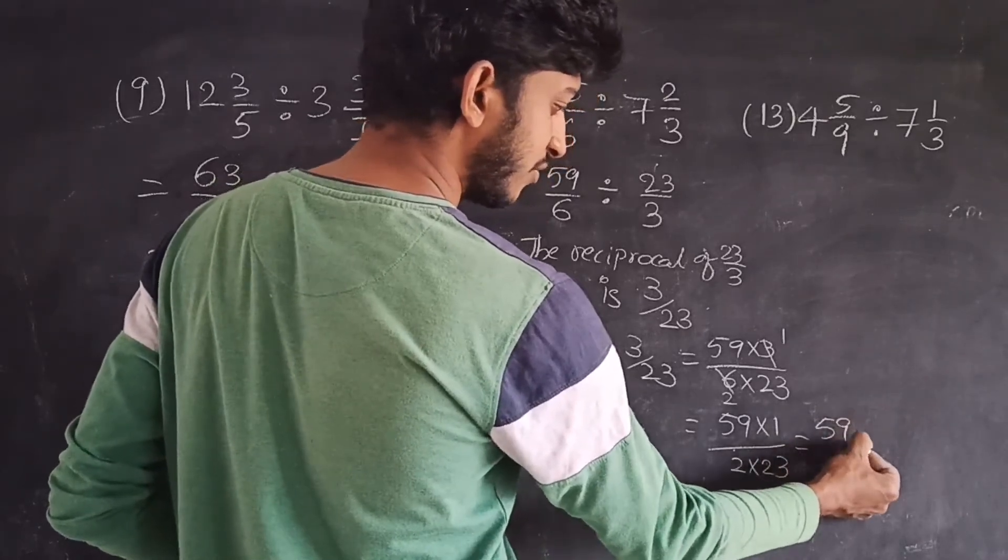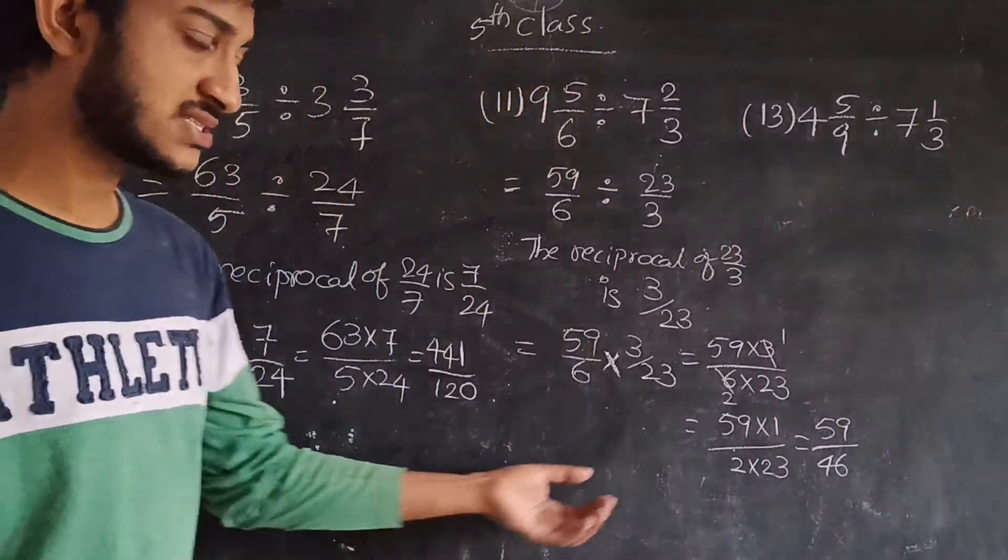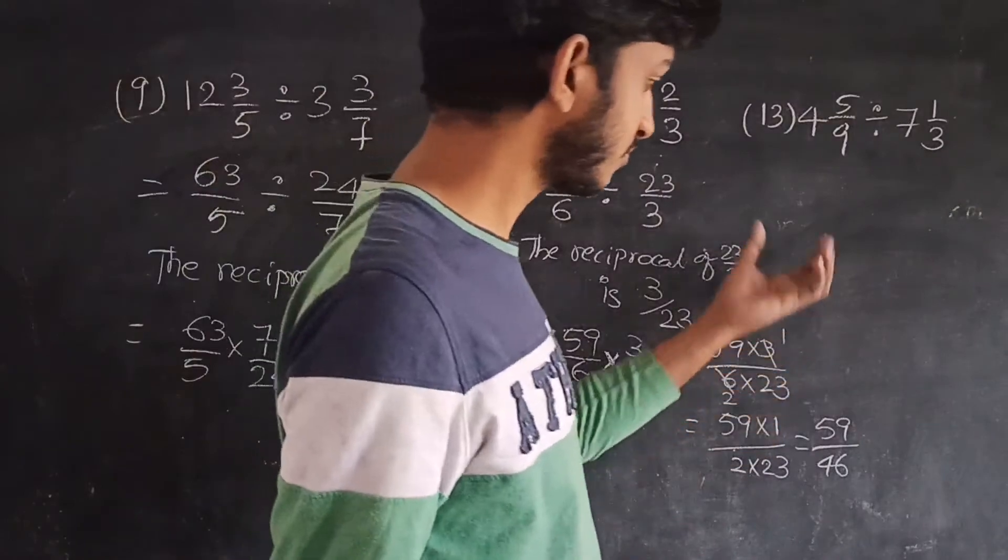That is equal to 59 into 1 is 59 by 2, times 23 is 46. 59 by 46 is the answer.